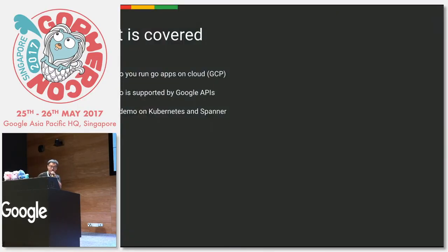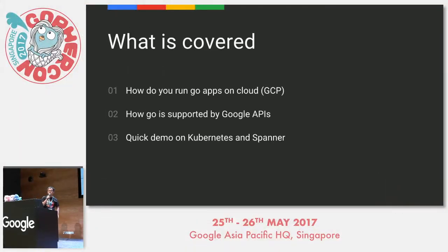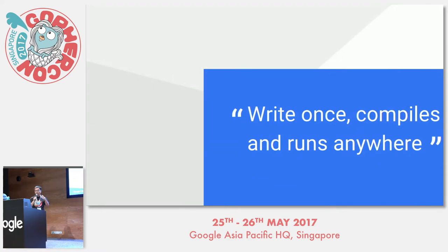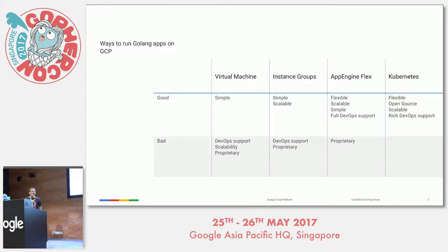When talking about Go support in cloud, we really mean two things: how do you run your Go apps on cloud, specifically GCP? And how well is Go supported as a client API language on Google Cloud? There are many ways to run Go apps. Google Cloud offers virtual machines — you can compile Go into a binary, create a systemd init script, and deploy to a VM. Alternatively, you can run instance groups with Docker containers that auto-scale by CPU or QPS.